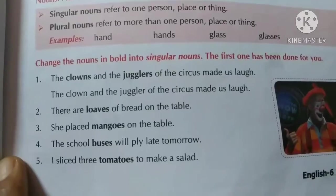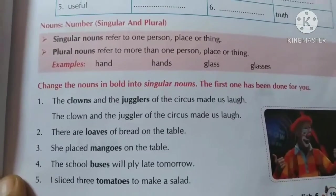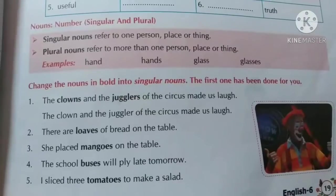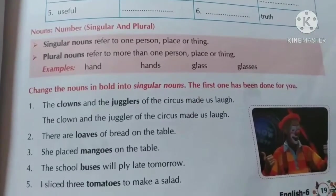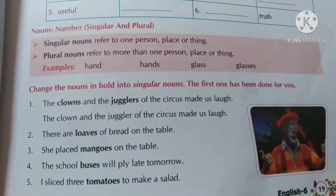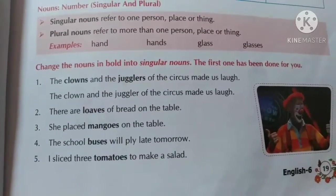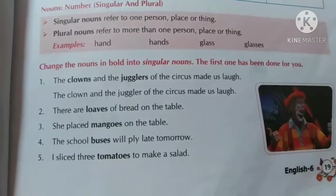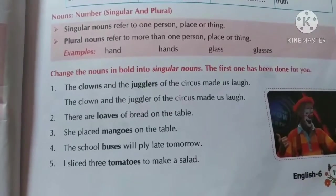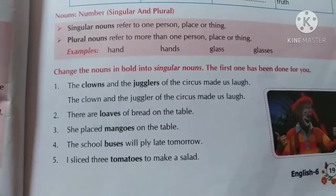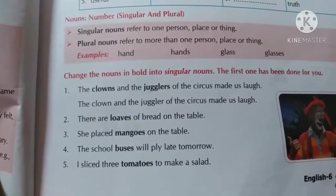See this exercise, children. Here we have 'clowns.' They could change the nouns in bold into singular. 'The clowns and the jugglers of the circus made us laugh.' Clowns ki jagah 'clown' aur jugglers ki jagah 'juggler' likhna hai — S hat gaya. 'The clown and the juggler of the circus made us laugh.' Second sentence: 'There are loaves of bread on the table.' Loaves ko singular mein change karenge, toh 'are' ki jagah 'is' ho jayega.